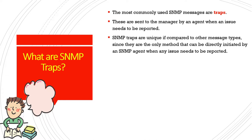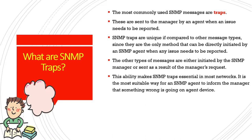The other types of SNMP messages — apart from traps — are either initiated by the SNMP manager or sent as a response to the manager's request. SNMP traps are useful because they are the most suitable way for an SNMP agent to inform the manager that something is wrong. When an issue occurs on the agent device, it can send that fault information in a trap message to the manager.